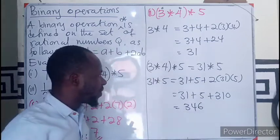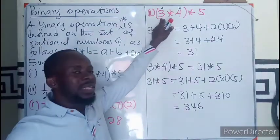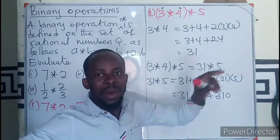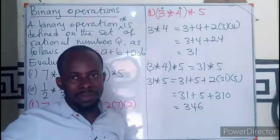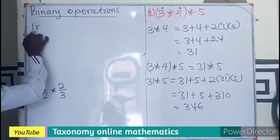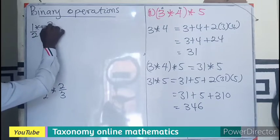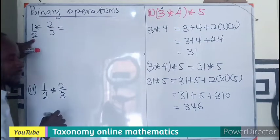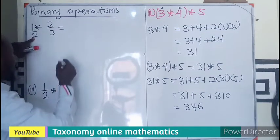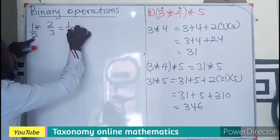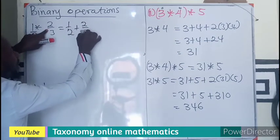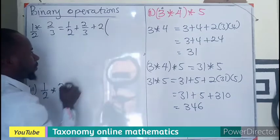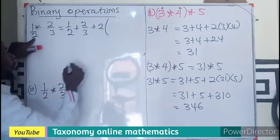So 346 is the value of (3★4)★5. Moving to the next part: evaluating (1/2)★(2/3). Here a is 1/2 and b is 2/3, so the first term will be 1/2 plus 2/3.